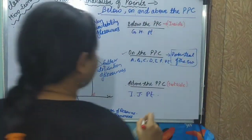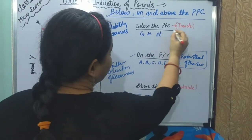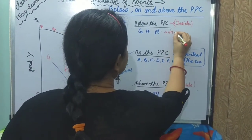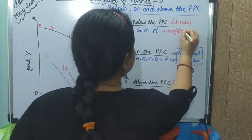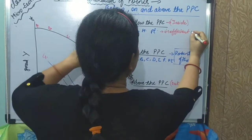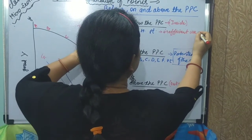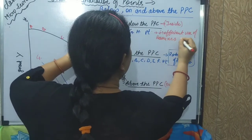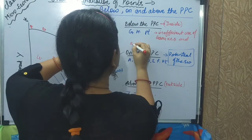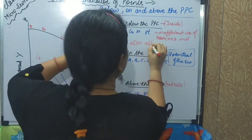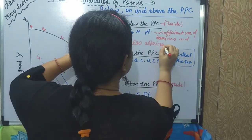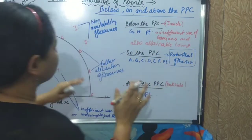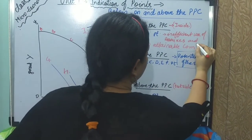To summarize clearly: inside the PPC means inefficient use of resources, and it is an attainable combination — we can attain it. On the PPC means fuller utilization of economic resources, and it is also an attainable combination. Outside the PPC — points like I and J — represents a non-attainable combination.